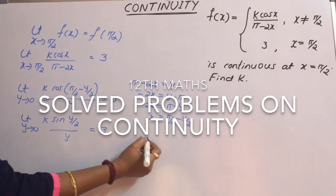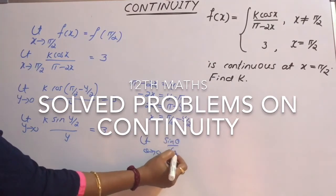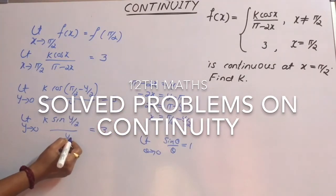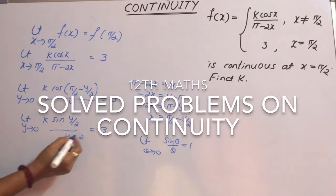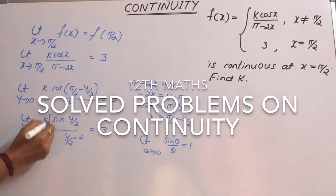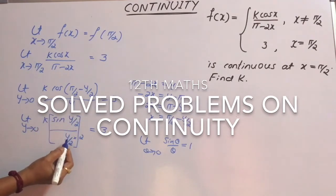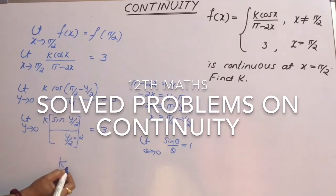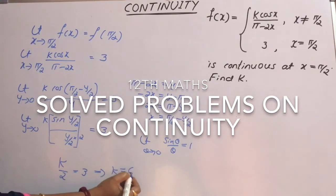We know that limit as θ tends to 0 of sin(θ)/θ = 1. To get that form, we need y/2 in the denominator, so we multiply and divide by 2. This gives limit as y tends to 0 of sin(y/2) divided by (y/2) equals 1. So the remaining expression gives k/2 = 3, which means k = 6.